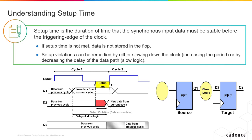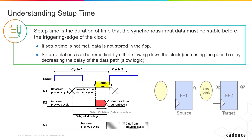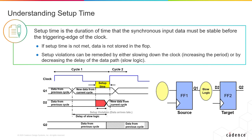If you look at the graphic below, there is some slow logic, and the data is going from Q1 to D2. The data is being transferred from FF1 to FF2. If you look at the D2 signal, it is changing before cycle 2 of the clock starts. The new data is ready to be saved into FF2 at the rising edge of clock cycle 2, but the D2 signal just changed value right before the clock edge without meeting the setup time requirement. Therefore, the data will not be stored into FF2. The reason for this is the slow logic.